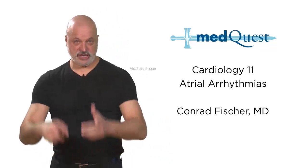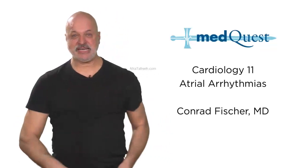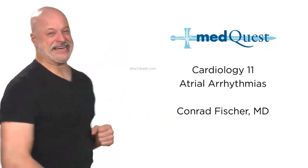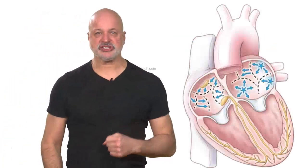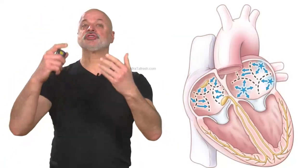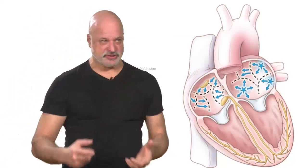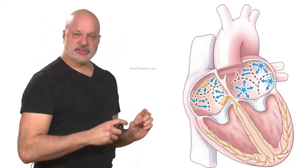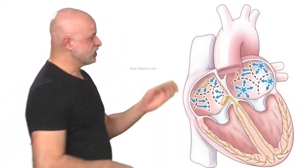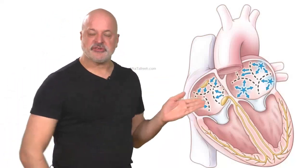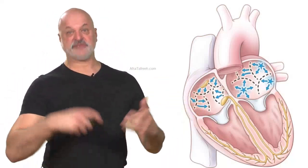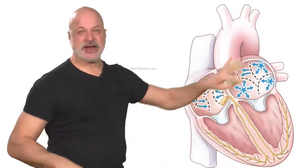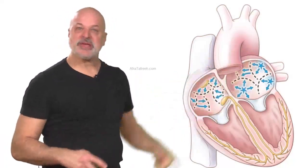What's the most common arrhythmia in the United States? It is of course atrial arrhythmias. This is one you have to know to the marrow of its bones. Atrial arrhythmias, particularly atrial fibrillation, means instead of the rhythm originating from the SA node, it's originating diffusely throughout the atrium.